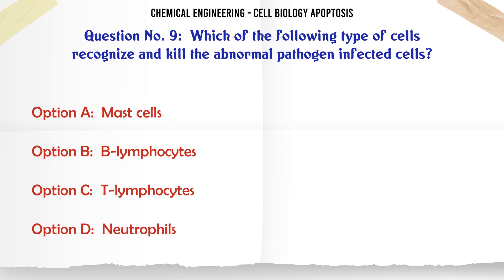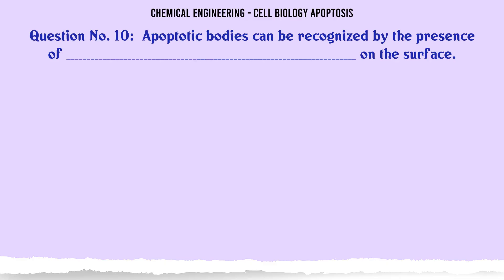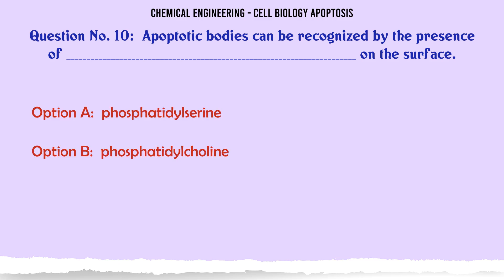Which of the following types of cells recognize and kill abnormal pathogen-infected cells? A. Mast cells, B. B Lymphocytes, C. T Lymphocytes, D. Neutrophils. The correct answer is T Lymphocytes.